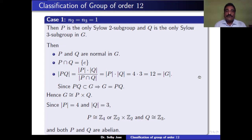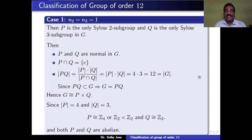Since P is a Sylow 2-subgroup and Q is a Sylow 3-subgroup, P ∩ Q = {e}. Also, |PQ| = |P|·|Q| / |P ∩ Q| = 4 × 3 = 12, which equals the order of G. Since PQ ⊆ G and |PQ| = |G|, we have G = PQ.